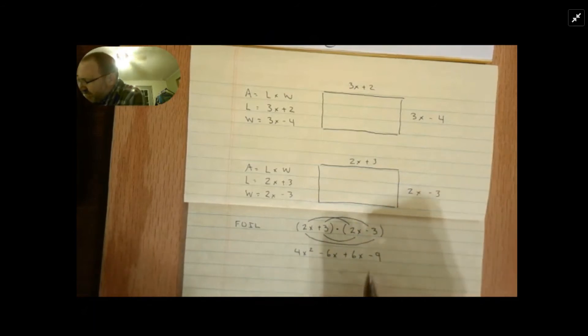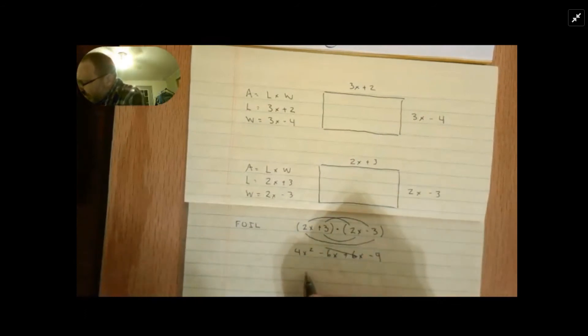Now we're going to combine like terms. In my example, the minus 6x and the plus 6x simply cancel out. And so the area of our new rectangle is 4x squared minus 9. Keep in mind that your problem had a different set of binomials, but you would use this same method to find the area of your problem.